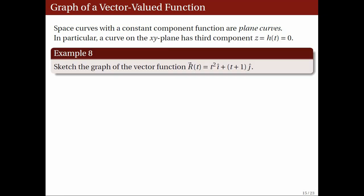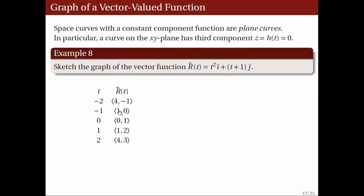For instance, consider the vector function r(t) given by t² î + (t+1) ĵ. Here, the k-hat component is zero. Since the components are all polynomials, the domain of this function is the set of real numbers. Since the k-hat component is zero, the graph of this function just lies on the xy-plane, and so we can drop the third component. When we substitute values of t, we just get two-dimensional vectors as images.